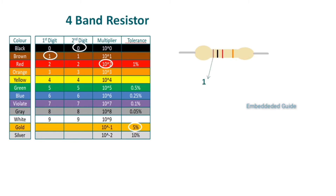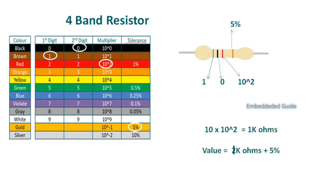In another 4-band example, the first color band is brown — the value is 1. The next color band is black — the black value is 0. The third color band is red, which represents the multiplier value. The red color multiplier is 10 to the power of 2. The fourth color band is gold — the gold color tolerance is 5%. So the resistance value: first digit is 1, second digit is 0, that is 10. The multiplier is 10 to the power of 2, giving a resistance value of 1 kilo ohm.